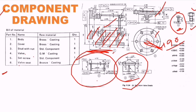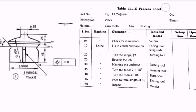The next topic is the process sheet, which is again a very important factor for every production drawing question. The skeleton of the process sheet is very important. This table includes: part number, description, material, size, quantity, and time — this information above the table is compulsory and carries marks.